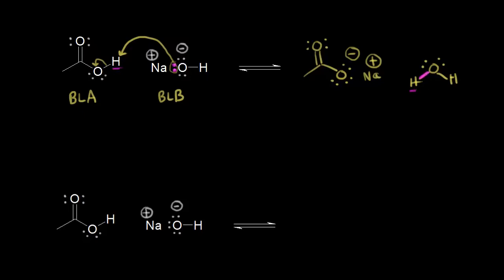We also need to follow the electrons in here — I'll make them blue. These electrons in blue come off onto the oxygen. So those electrons in blue are right here, which gives the oxygen a negative one formal charge. So this is an acid-base reaction.